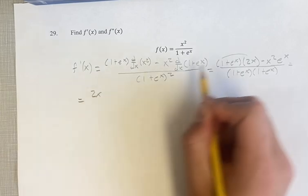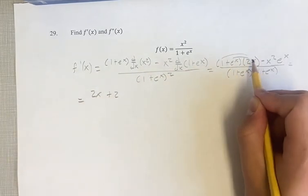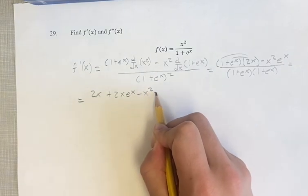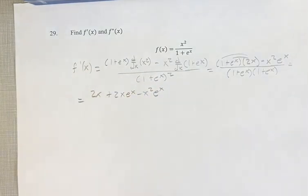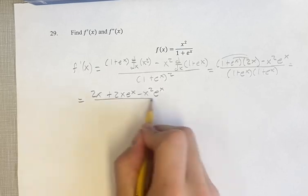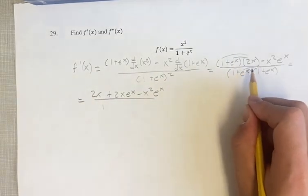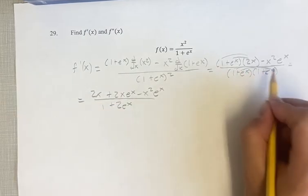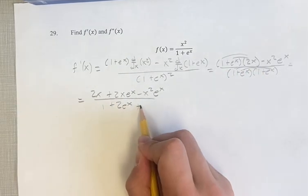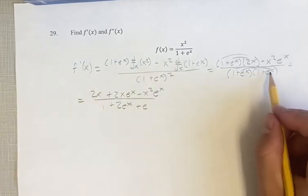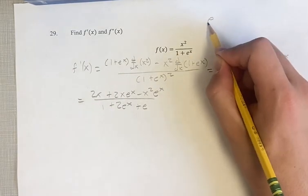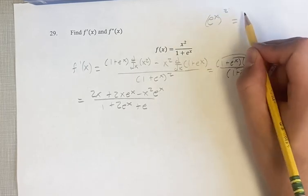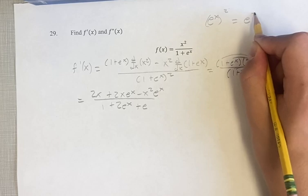On top we have 2x + 2x·eˣ − x²·eˣ. On the bottom we have 1 + 2eˣ + e^(2x), since eˣ times eˣ equals e^(2x) — when you have the same base raised to a power, you multiply the exponents, giving e^(2x).